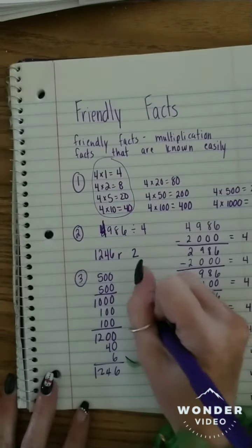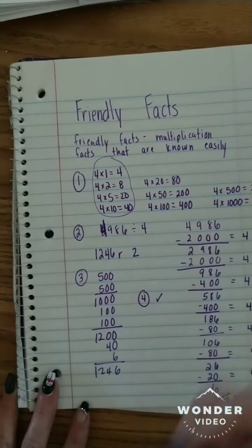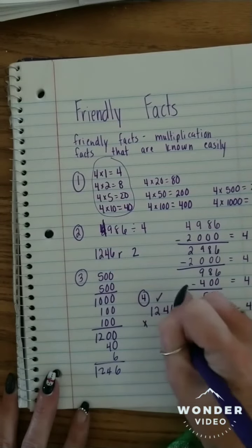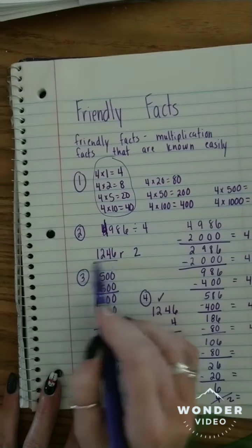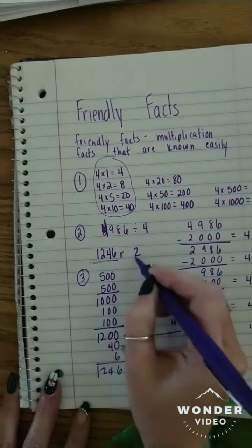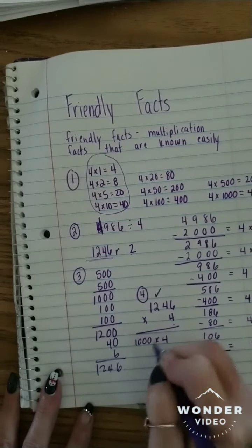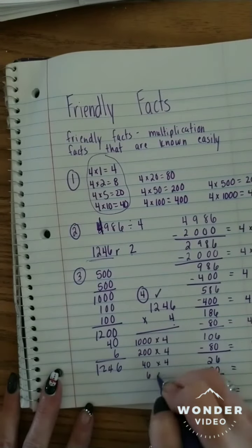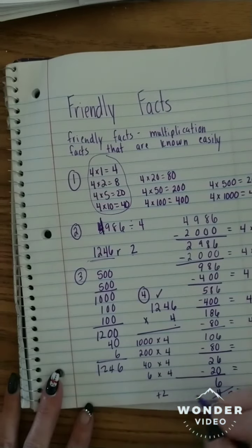And the last step is to check our work using our partial products. So I know that I need to multiply my quotient here times my divisor, and then I add in my remainder. So that is 1000 times 4, 200 times 4, 40 times 4, and 6 times 4. And then that total will be plus 2 to get my final.